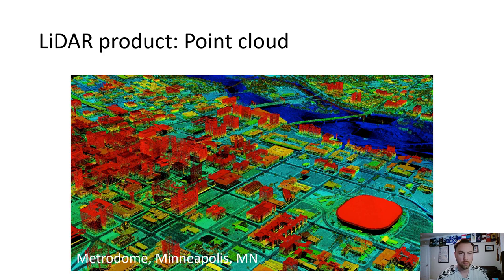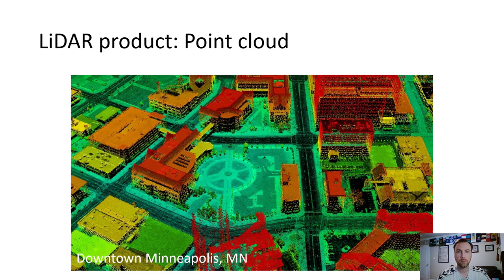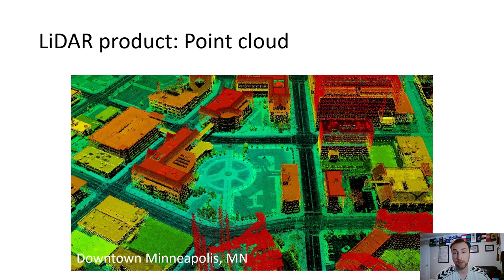Here is an example showing what appears to be elevation data classified by height — a neighborhood in Minneapolis. The colors come from the height values. In downtown Minneapolis, the only-returns or ground returns are able to capture even subtle differences like walkways through a quadrangle, surrounded by grass or parking lots, because different surfaces have different spectral signatures.